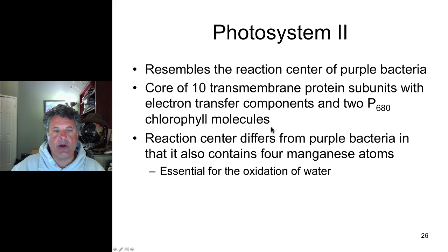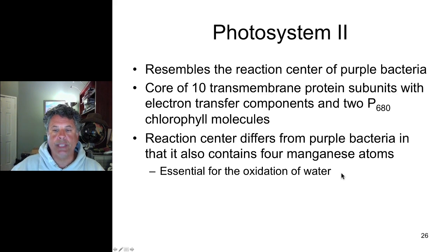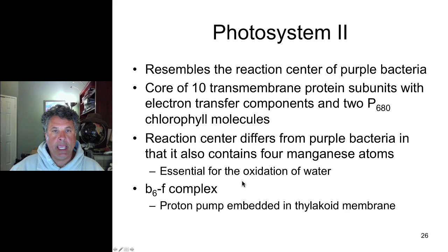Photosystem II differs from purple bacteria in that it contains 4 manganese ions, which are essential for the oxidation of water — accepting electrons from water and producing molecular oxygen — making this oxygenic photosynthesis. In addition, there is the B6F complex, a proton pump embedded in the thylakoid membrane within chloroplasts.